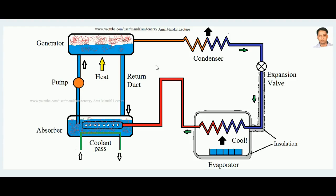This type of refrigeration system is generally used in industries where waste heat is available, because the job of the compressor is totally eliminated and the refrigeration effect in the evaporator is developed by the action of heat itself. If an industry has spare heat that would otherwise be lost to the environment, that heat can be used to develop the refrigeration effect.